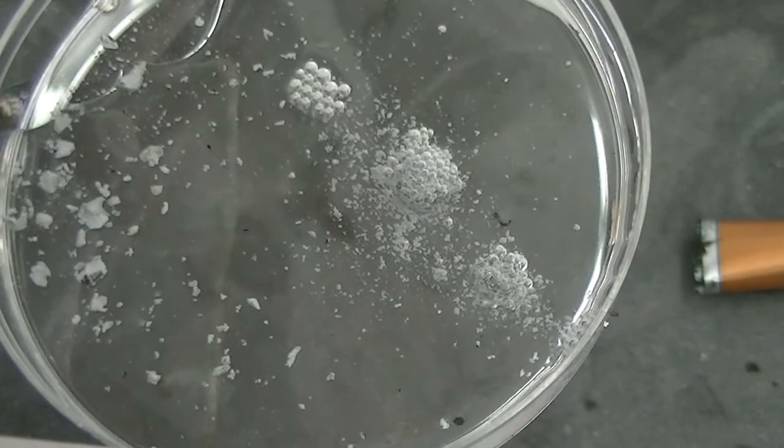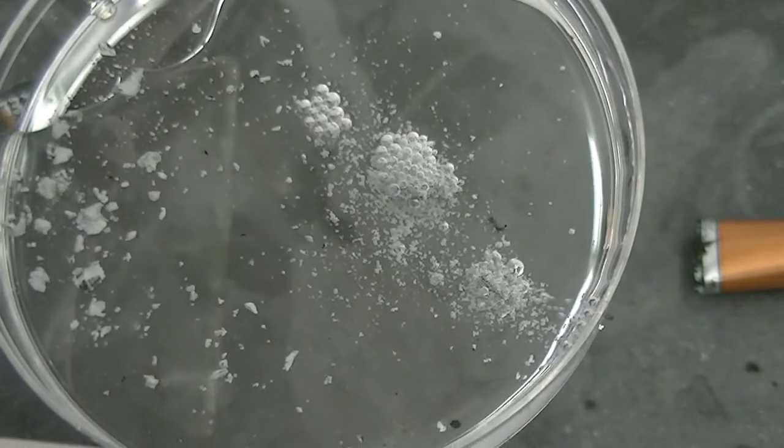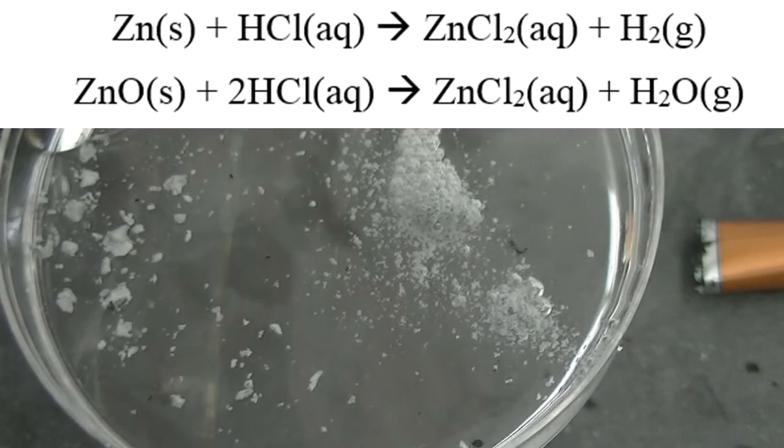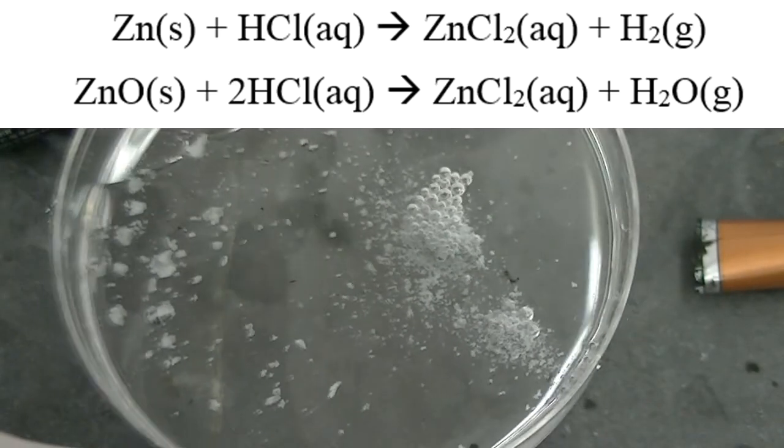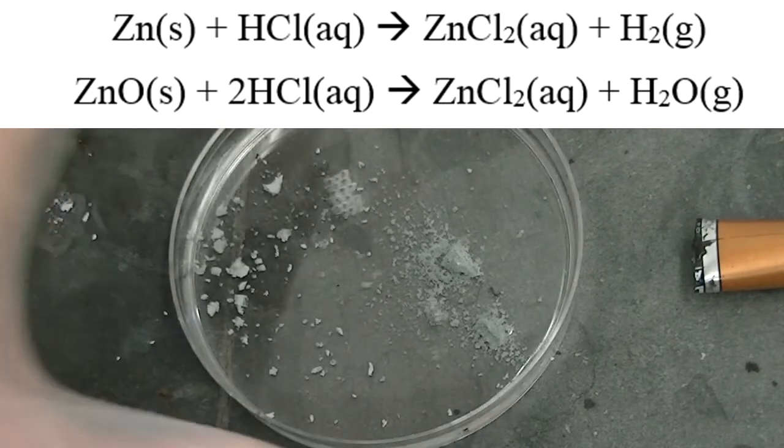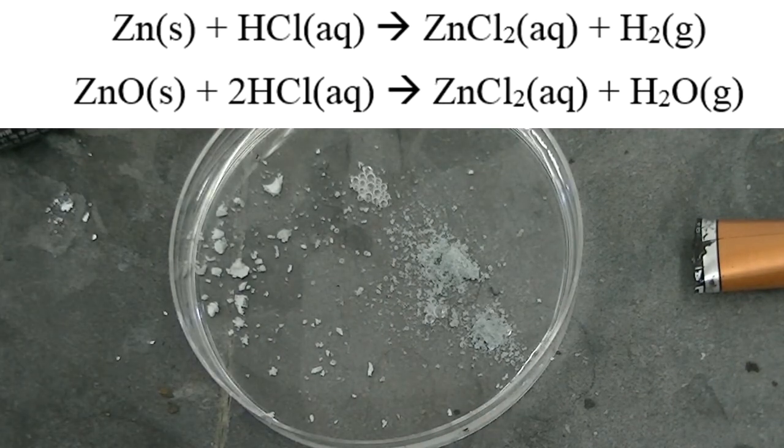Now, zinc oxide does react with hydrochloric acid. It just doesn't produce a gas when it does so. That's why we don't see any bubbles on the zinc oxide. For those that are curious, I've placed the chemical equation that describes the reactions between zinc and hydrochloric acid and zinc oxide and hydrochloric acid above.